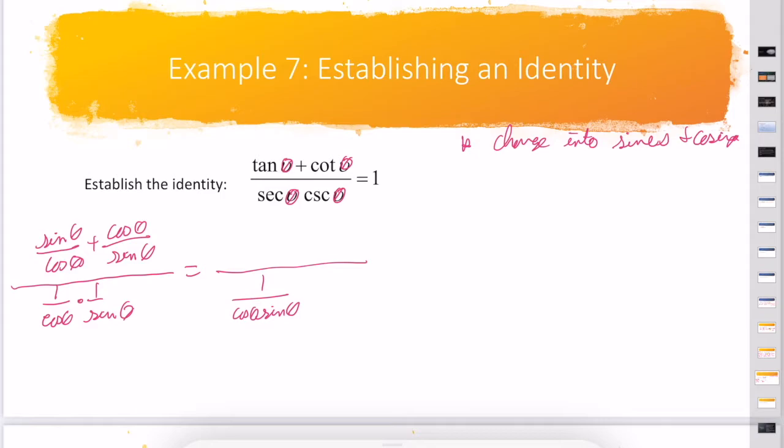I need to find the LCD to add these two fractions. I'm going to multiply on the right by cos θ over cos θ, on the left by sin θ over sin θ, because the LCD is cos θ sin θ.